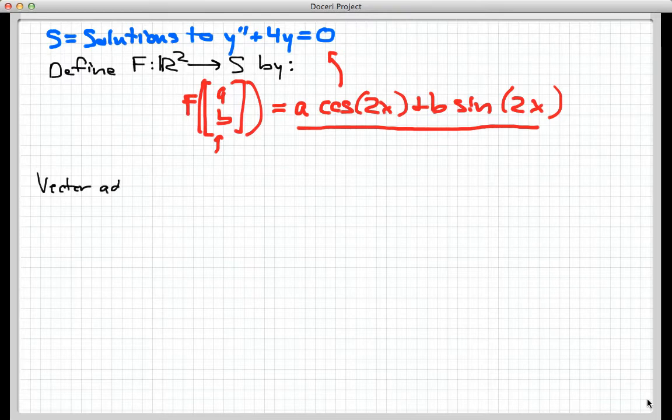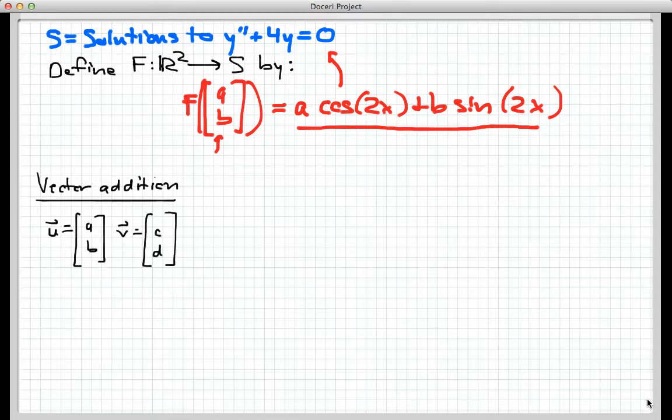To show that vector addition is preserved, I'm going to choose two random vectors out of R². Let's call them U and V. So U, let's give it components a, b, and V, let's give it components c and d. These are just any two vectors in R² - I'm not specifying what the a, b, c, and d have to be. And so I want to show in this phase of the proof that F(U+V) is equal to F(U) + F(V).